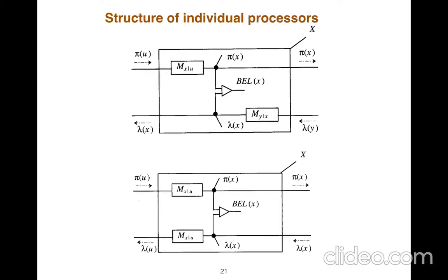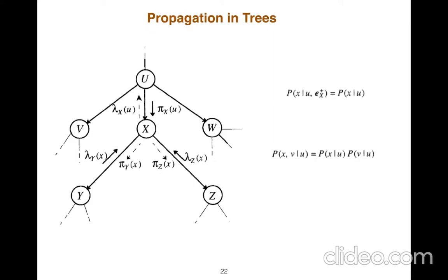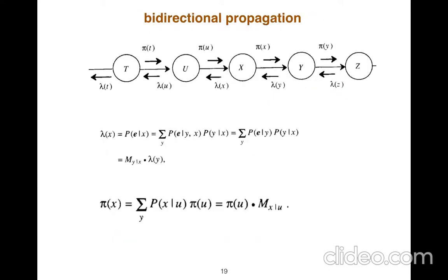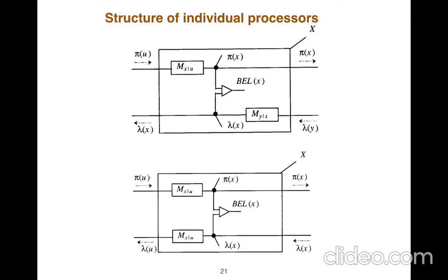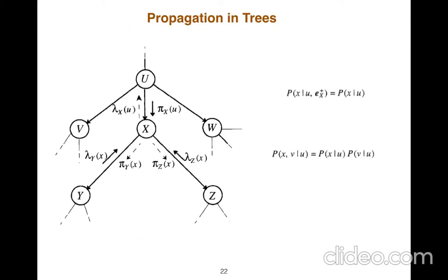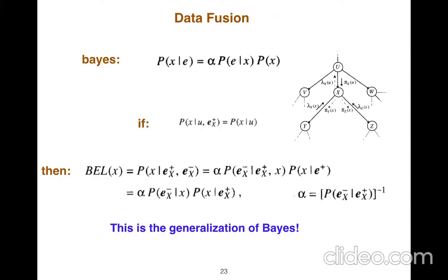Because Professor Judea Pearl was an electrical engineer, he used to model this propagation by some electrical symbols. The basic idea in chain rule, in chain graphs, could be seen here in a more general graph, but each node has just one parent but it could have some children. We use data fusion, so we get some evidences from top and bottom of the graph, and we calculate belief of that.